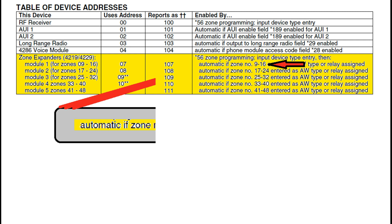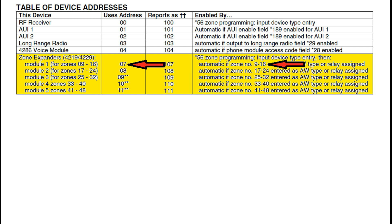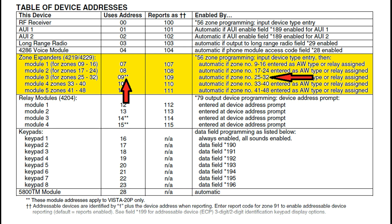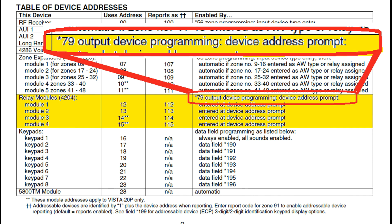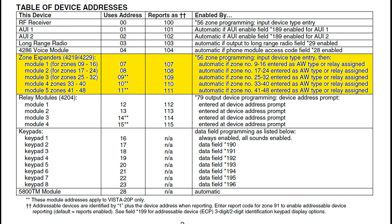This will automatically enable address 7. So zones 9 through 16 are address 7. Zones 17 through 24 is address 8 for your second expander module. And 25 through 32 should be address 9, but you need to pay attention to these asterisks — they indicate the address only applies to the Vista 20P. An older panel like a Vista 15 won't be able to do this. The next set of addresses are for relay modules: 12 through 15. These addresses are activated when you use the star 79 output device programming to set up each relay in the module. Some zone expanders actually have relays mounted on board them. So even if you don't use the zones in the zone expansion module, using star 79 to program a relay in the module will also activate that module's address.